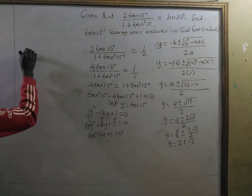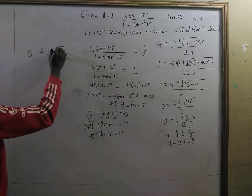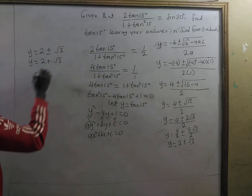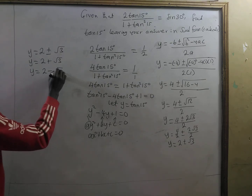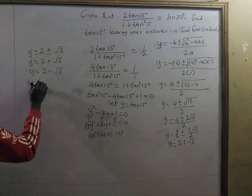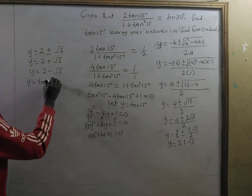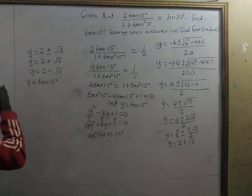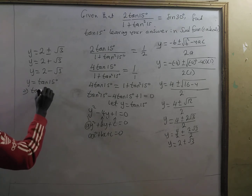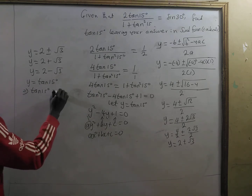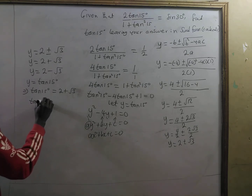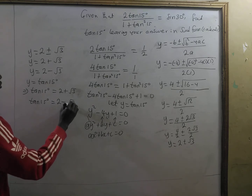So we have y equal to two plus root three, or y equal to two minus root three. Since y equals tangent of 15 degrees, this implies tangent of 15 degrees equals two plus root three, or tangent of 15 degrees equals two minus root three.